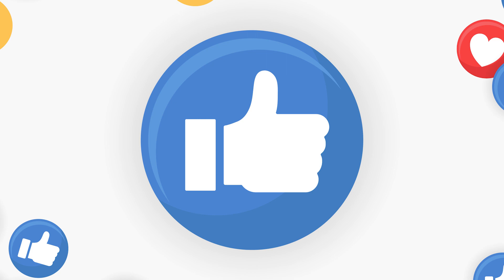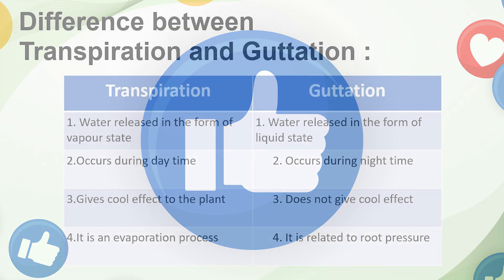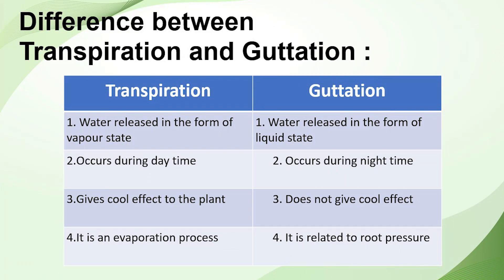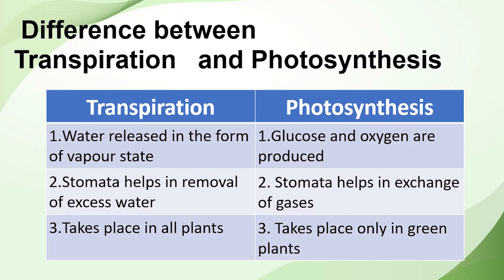I hope you understood the topic. Let us make our understanding better by differentiating these concepts. Difference between transpiration and guttation: water is released as water vapor in transpiration, whereas water is released in liquid state in guttation. Transpiration occurs during daytime whereas guttation occurs at nighttime. Transpiration gives a cooling effect to the plant; guttation does not. Transpiration is an evaporation process whereas guttation is related to root pressure. In transpiration, stomata helps in removal of excess water; in photosynthesis, stomata helps in exchange of gases. Transpiration takes place in all plants whereas photosynthesis takes place only in green plants.